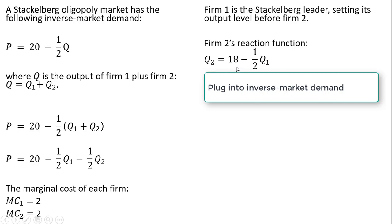We're going to take this reaction function and plug it into the inverse demand. Where I have Q subscript 2, I'm now plugging in Firm 2's reaction function, and we'll simplify this.